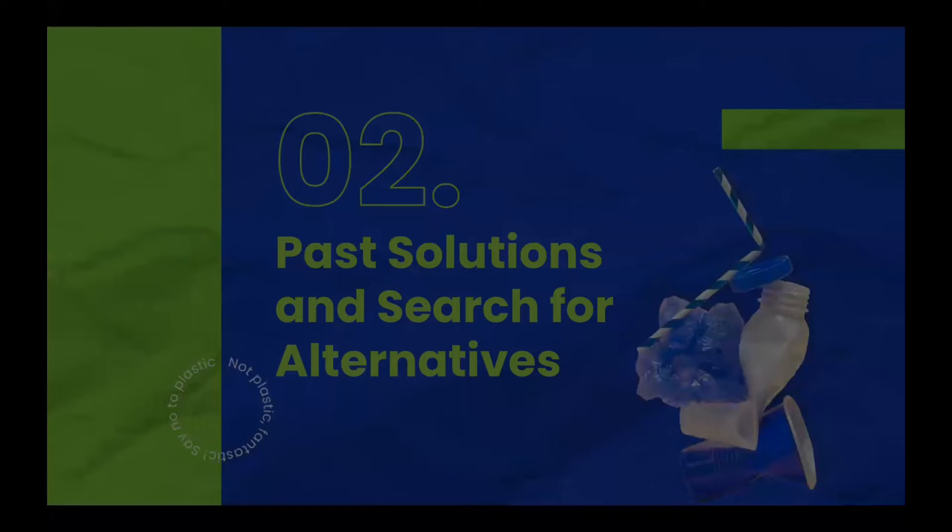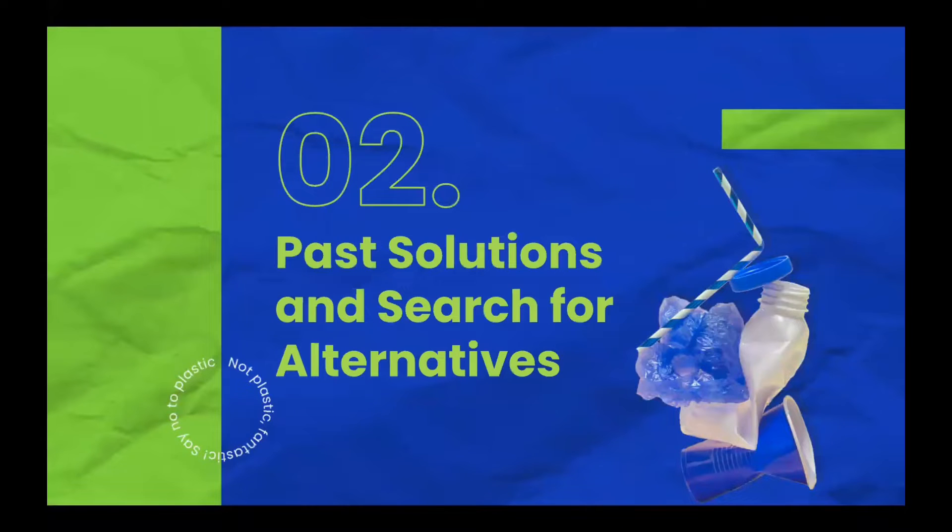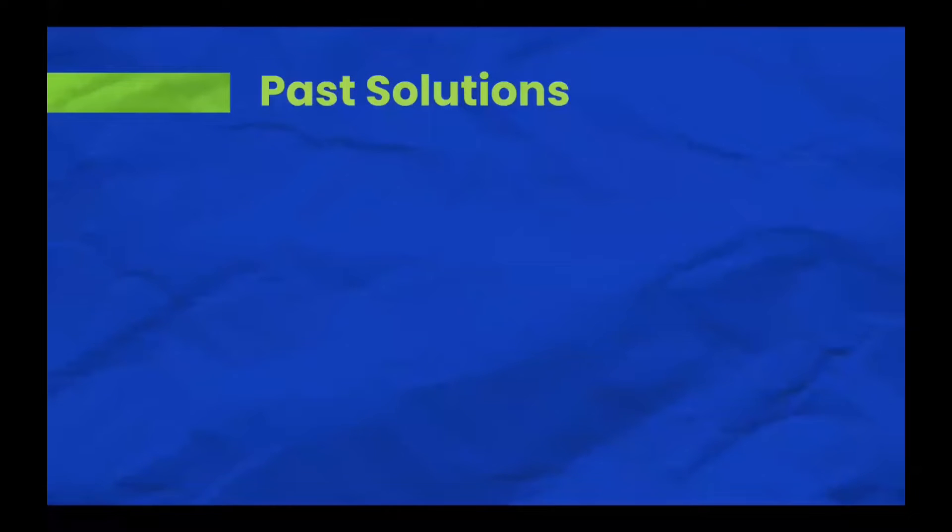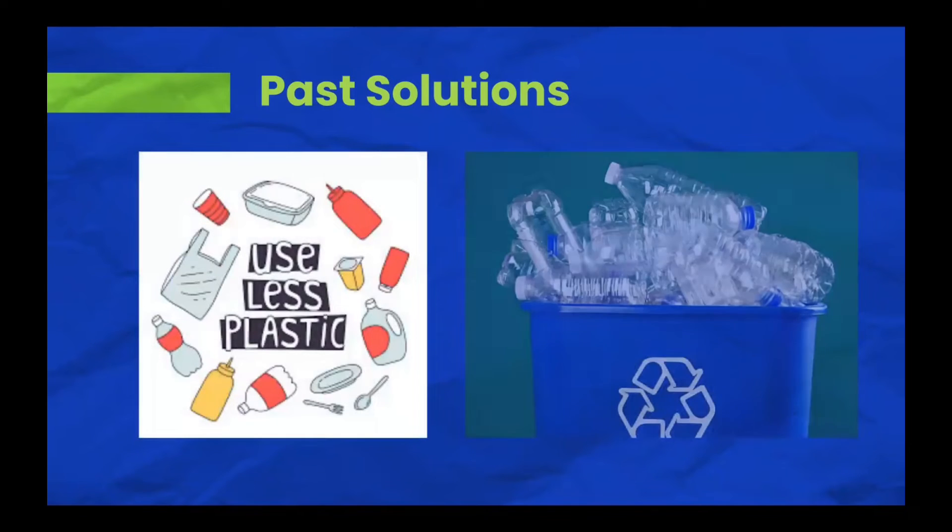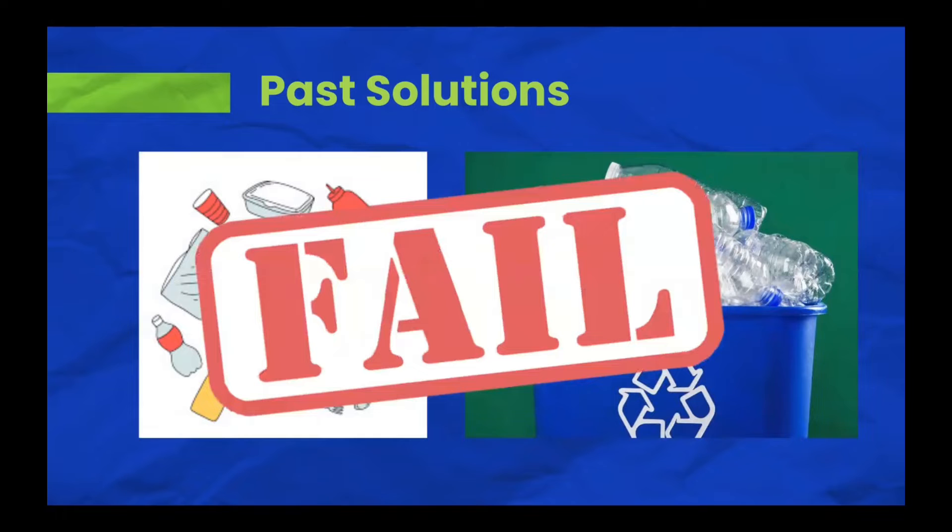Therefore, let's do a quick overview of the past solutions and alternatives scientists have come up in the past decade or so. Over the past few years, scientists have attempted to mitigate plastic pollution. Past solutions such as using less plastic or recycling it more are simply just not as futile, as plastic is an inescapable part of our modern everyday life.